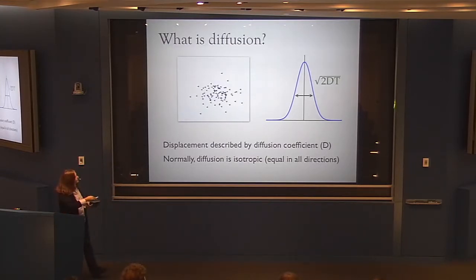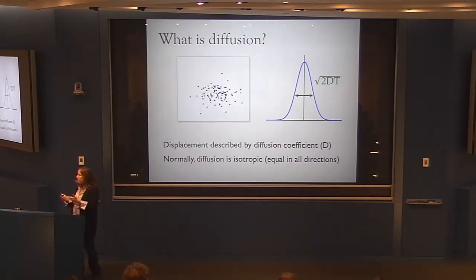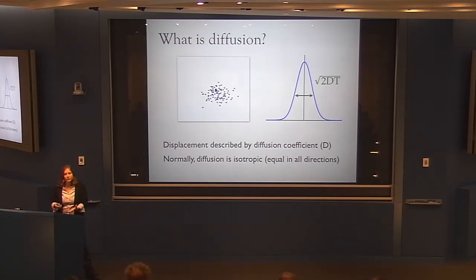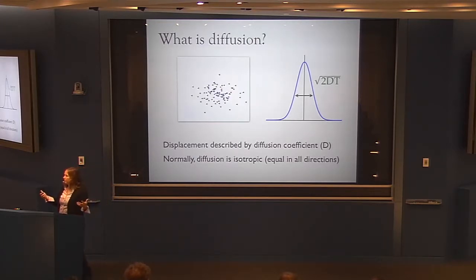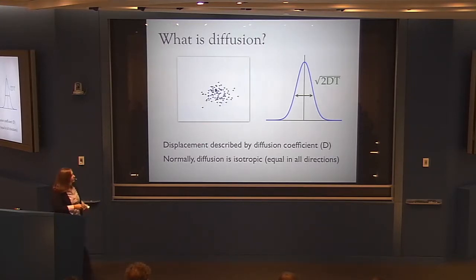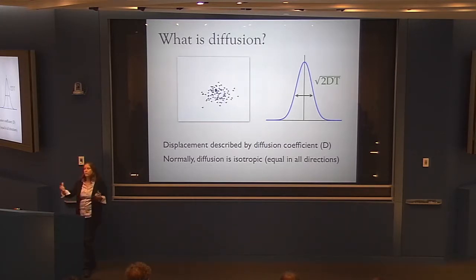The expected displacement of water molecules is described by a Gaussian with a width determined by two factors: the diffusion coefficient — a property of the material (water has a relatively high diffusion coefficient, a viscous fluid a much lower one) — and time, how long you allow those water molecules to move. This is the relationship known as Brownian motion that Einstein derived.